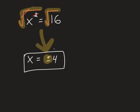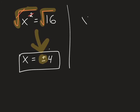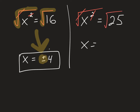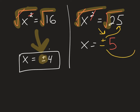Let's do another example: x squared equals 25. I want to get x by itself, so I undo the square by taking the square root of both sides — the square and square root cancel. The square root of 25 is 5, but wait — since I took the square root of both sides, I have to write plus or minus. So x equals plus or minus 5, because positive 5 times positive 5 is 25, and negative 5 times negative 5 is also 25.